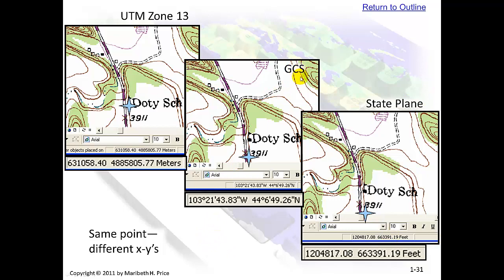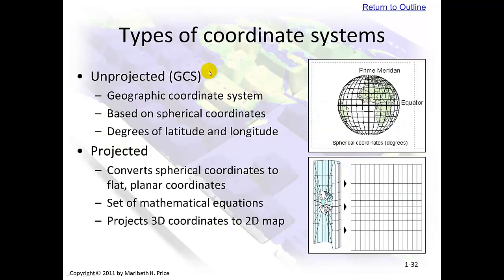Types of coordinate systems. There's unprojected, which are geographic coordinate systems (GCS). These are based on spherical coordinates, and their X and Y are degrees of latitude and longitude. Projected systems are flat — they show a light bulb shining through a clear globe to create grid lines — converting spherical coordinates to flat planar coordinates using a set of mathematical equations. This is projecting 3D coordinates to a 2D map.